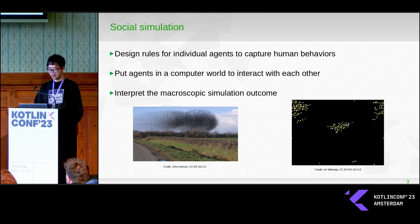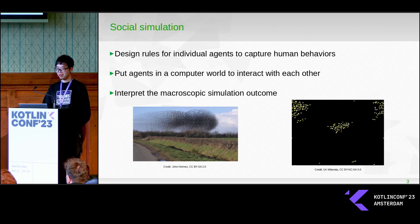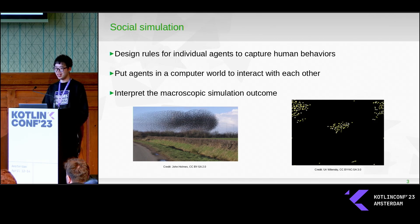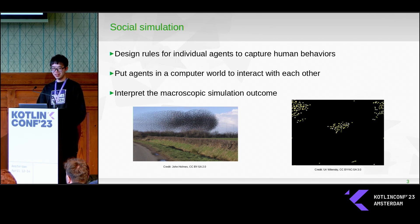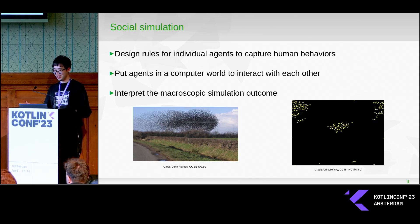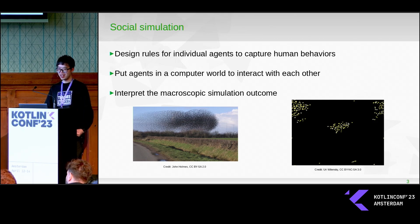Briefly speaking, social simulation is about designing rules for individual agents to capture human behavior, to run simulation, to understand the social science behind the macroscopic outcome. You also have agents in reinforcement learning, but social science has a different focus than computer science.